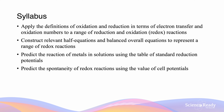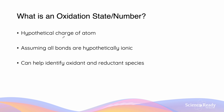Hi everyone. In this video we'll be discussing oxidation numbers and states. So what is an oxidation state or an oxidation number? It is the hypothetical charge of an atom when we assume that all the bonds are hypothetically ionic. And why is it useful? It's useful because it can help to identify the oxidant and the reductant species in a particular reaction.